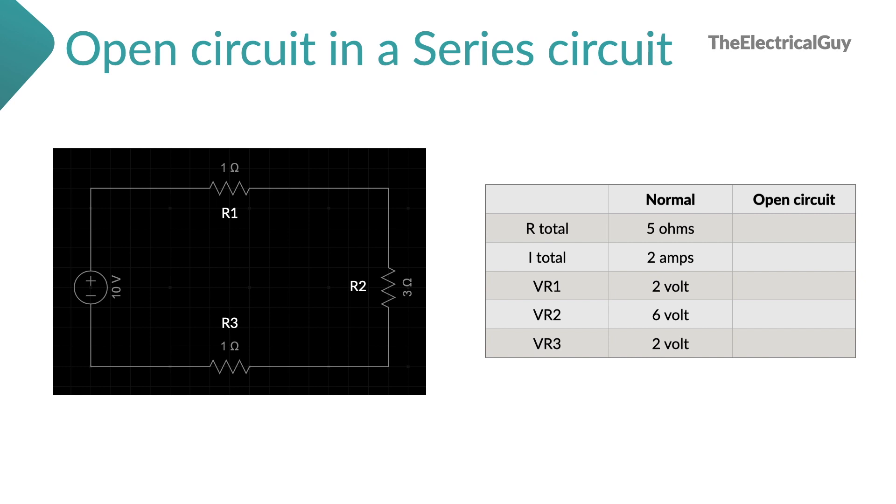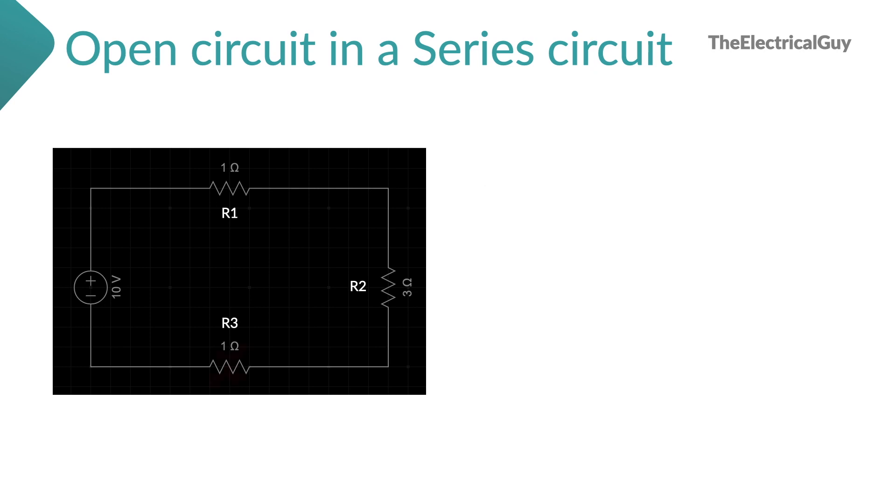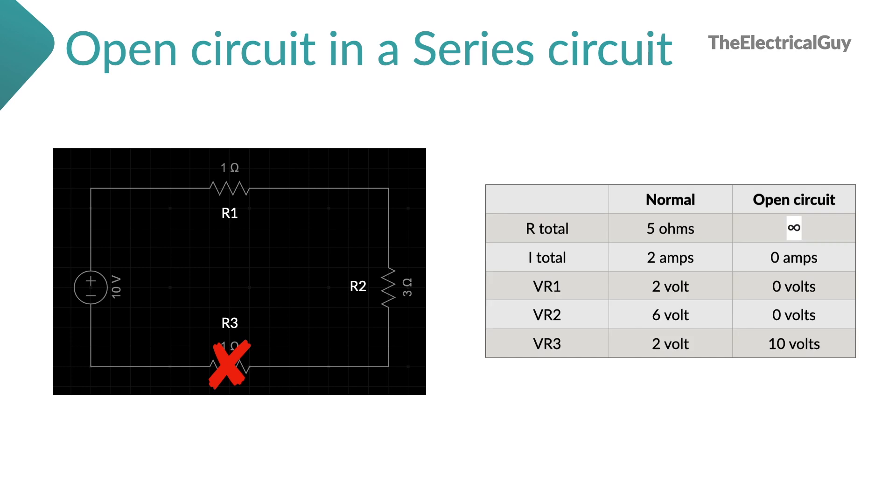Now let's say there is a component failure. R3 is damaged which caused an open circuit. Now let's see what happens with voltage and current. First thing we can notice is that current in the whole circuit will become 0.